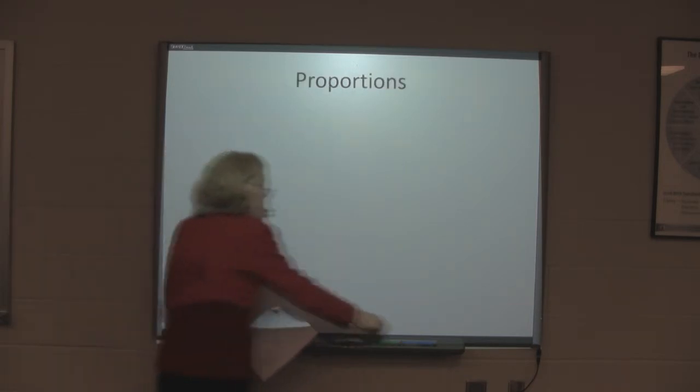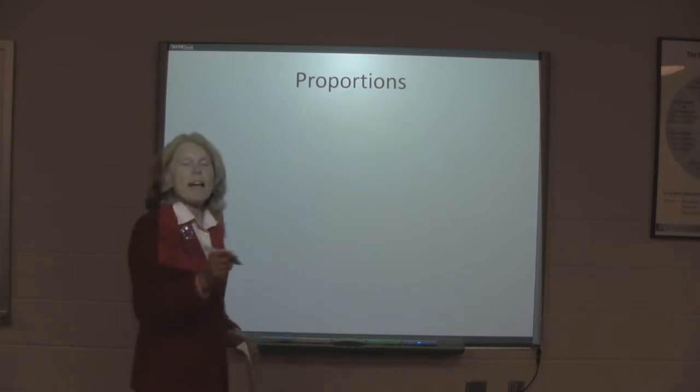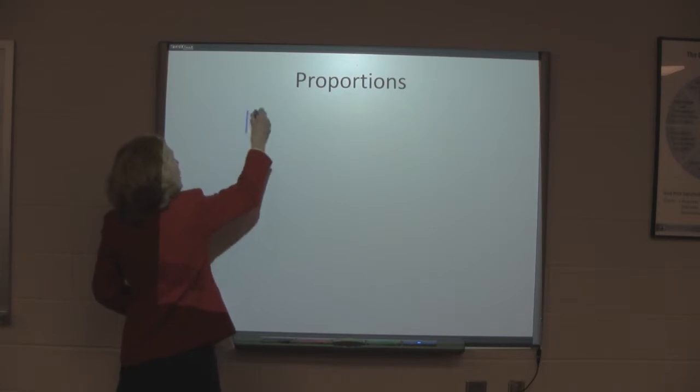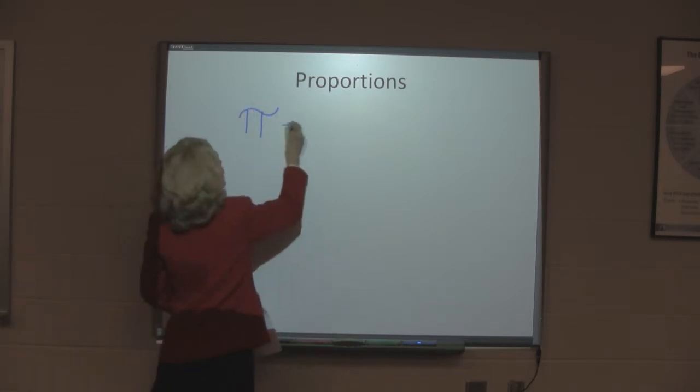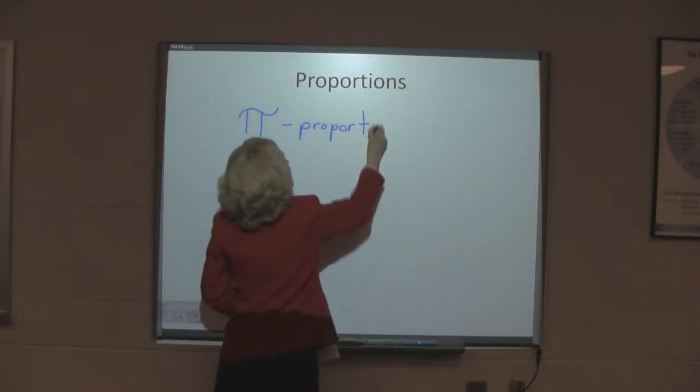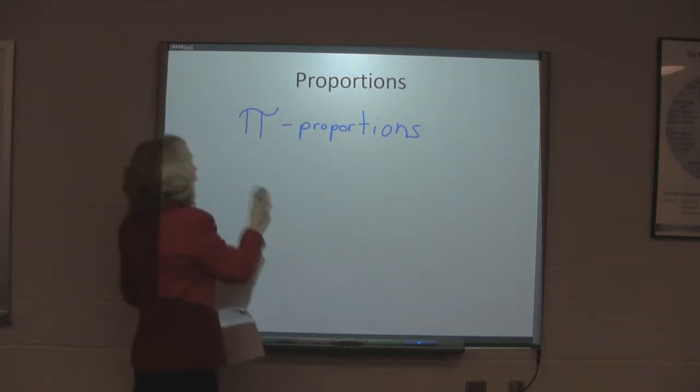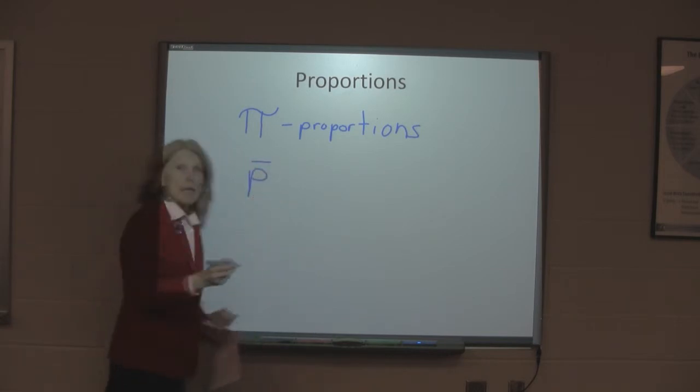Now we are going to be testing in the chi-square goodness of fit test, we're going to be testing proportions. And proportions are denoted by pi.